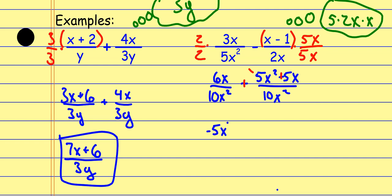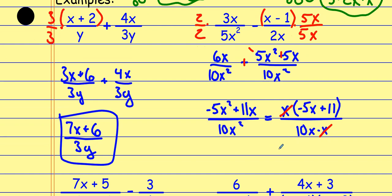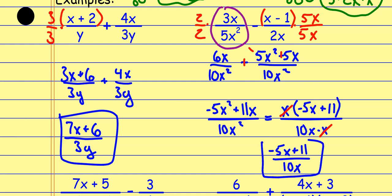Changing subtraction to adding the opposite gives me negative 5x squared plus 11x all over 10x squared. I can factor an x out of the numerator, and the denominator 10x squared is like 10 times x times x, so one of the x's cancels. My end result is negative 5x plus 11 all over 10x. Looking back at the original problem, there was something I could have simplified before I started — this first fraction can be reduced by a factor of x, which would give a smaller common denominator. Part of the reason this had to reduce at the end is because I could have reduced at the beginning.